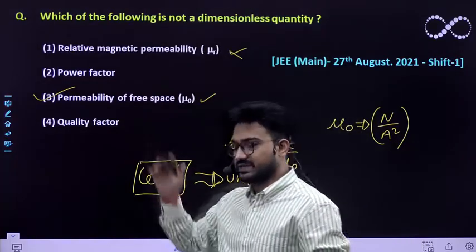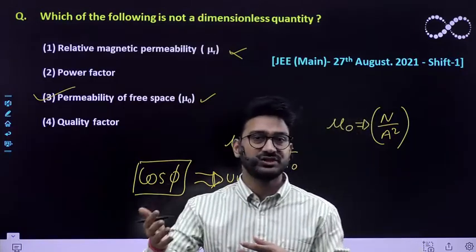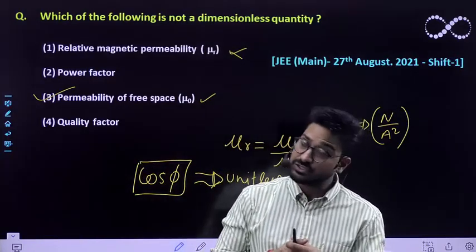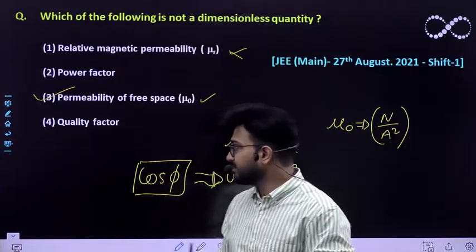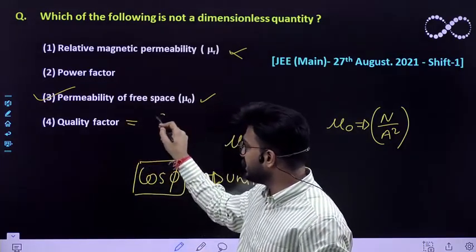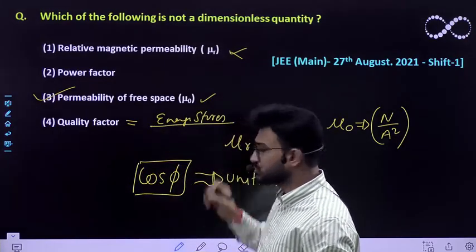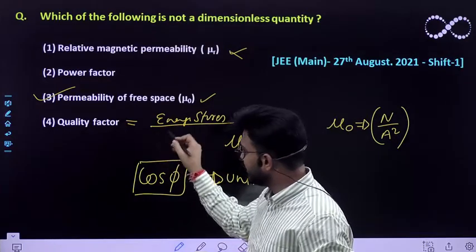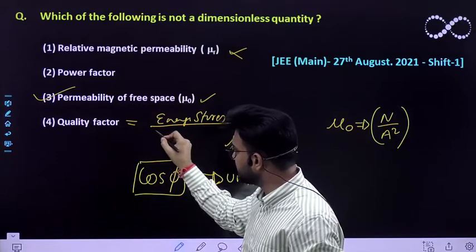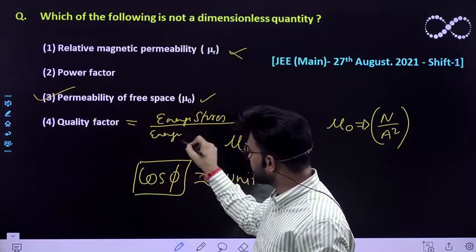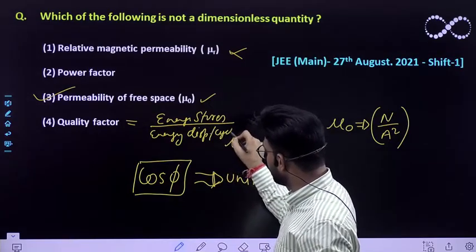And what about quality factor? Quality factor is also a ratio of energy stored per unit energy dissipated per cycle. So that means quality factor is energy stored, energy stored divided by energy in oscillation, total energy stored divided by total energy dissipated.